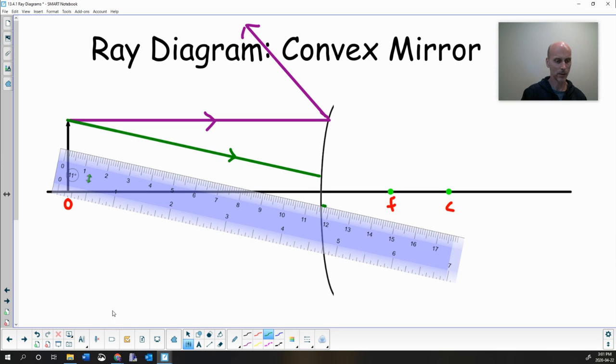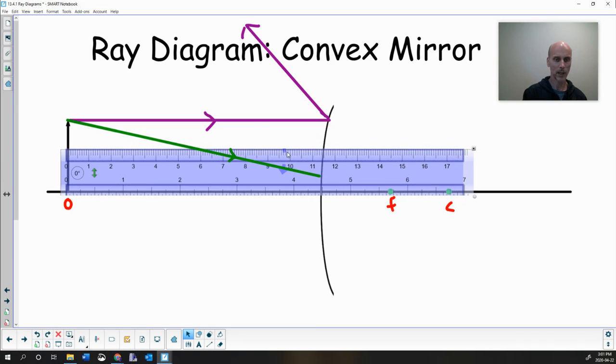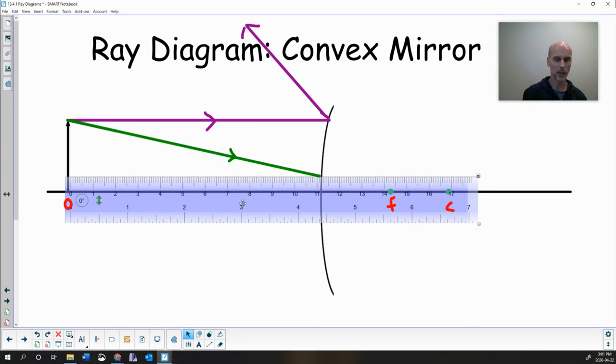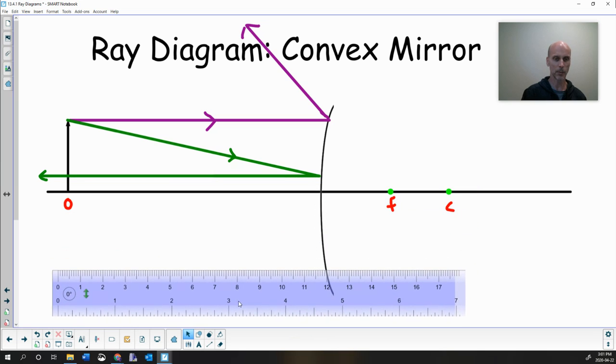So it hits the mirror. And now I don't know if you remember this one, but it should reflect parallel to the principal axis. So be careful. It does indeed reflect. So make sure you show it bouncing off the mirror and then it'll end up going along this principal axis this way. And again, it kind of goes off forever and ever. So there's our first two rays.